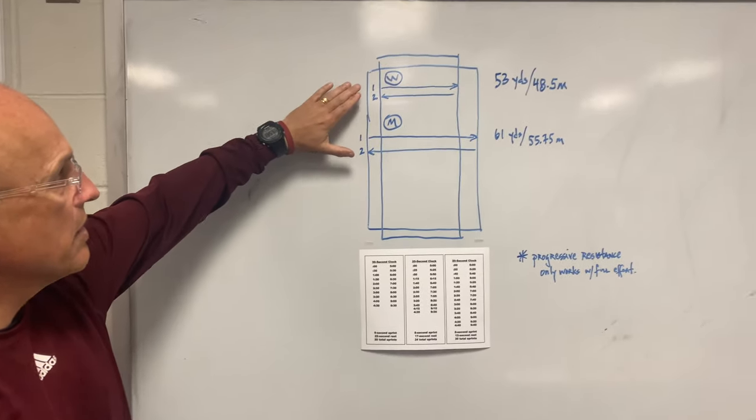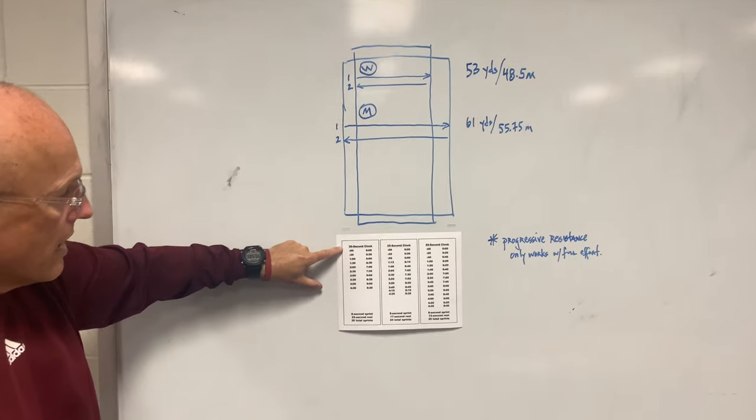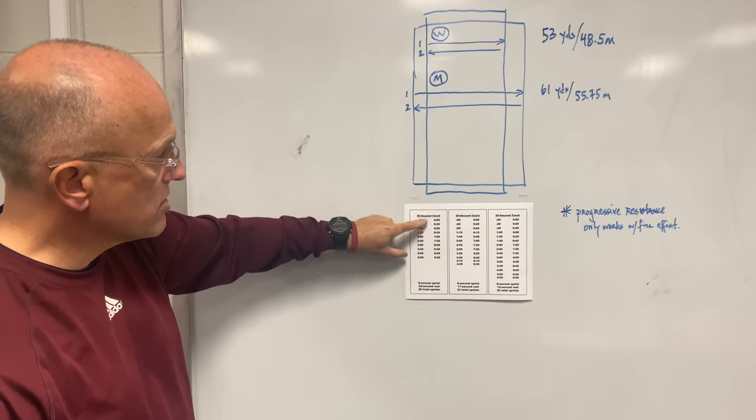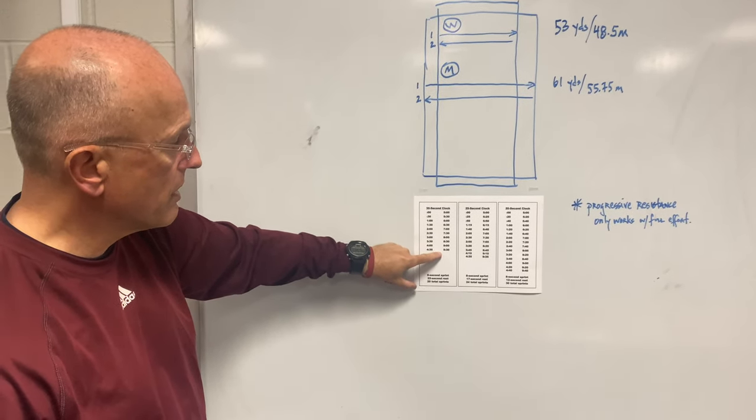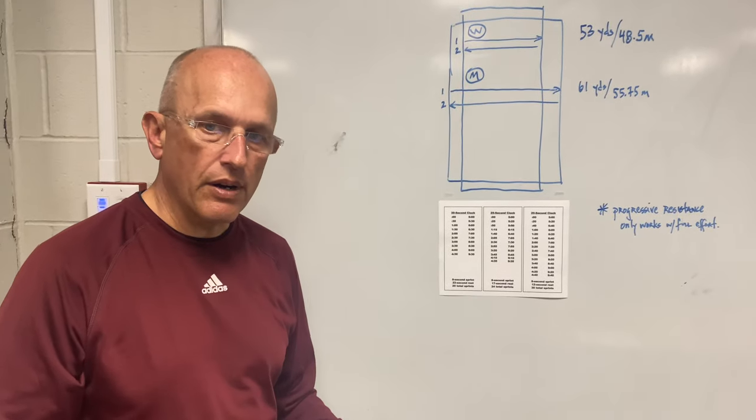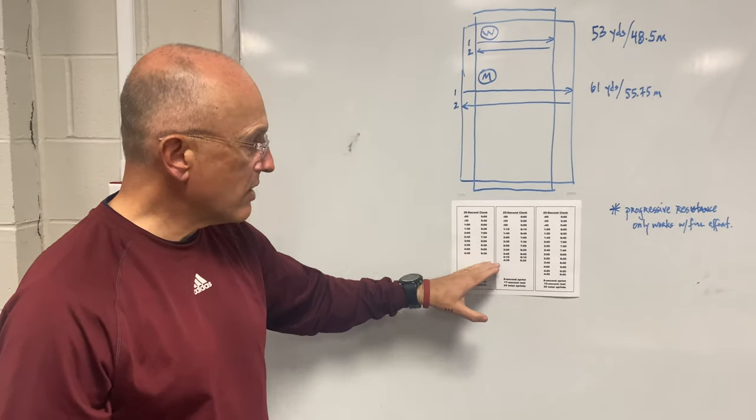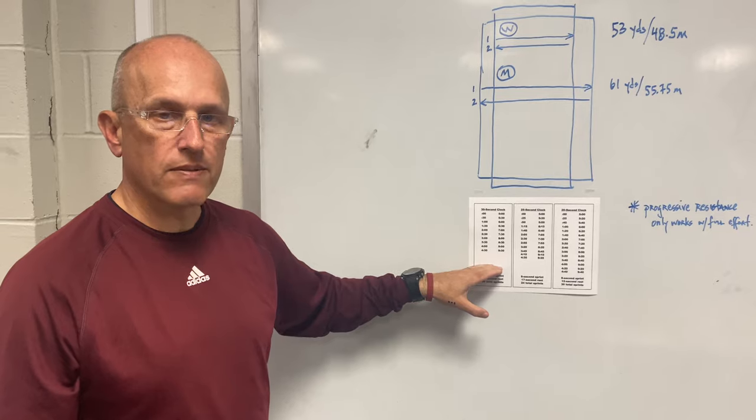So you start your summer in this fashion, a 30 second clock running as many of these as you can until you work your way to 10 minutes worth. The players who left here at the end of the spring can do 10 minutes worth of these sprints.